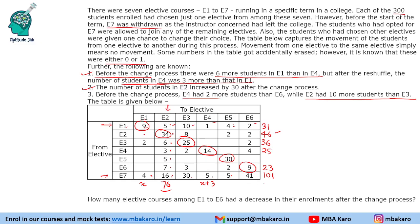Since there were initially 300 students total, we can add these values to find what is missing: 77, 102, 203, 239, 262 — giving us a remaining value of 38. Next, for the E2 row: 34 plus 8 is 42, plus 4 is 46. Since 46 is already complete, the missing values in that row are both 0.